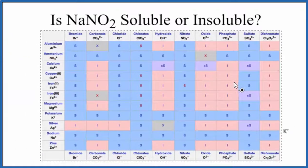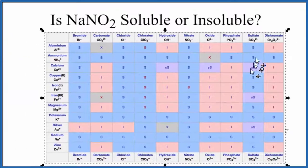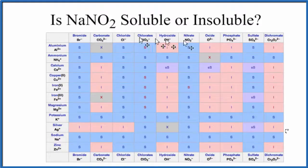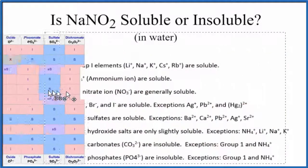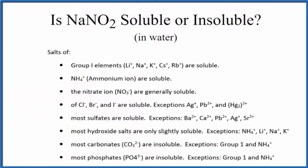We could also look at a solubility chart to see if sodium nitrite is soluble in water, but the chart has nitrate (NaNO3-), not NaNO2, so that's not going to help us.